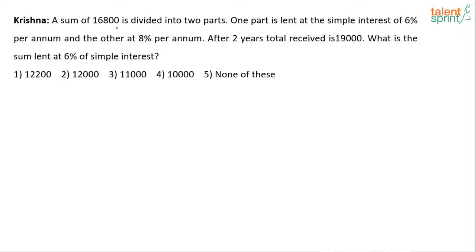Look at the question. A sum of 16,800 is divided into two parts. One part is lent at simple interest of 6% per annum and the other at 8% per annum. After two years, the total received is 19,000. What is the sum lent at 6% simple interest?